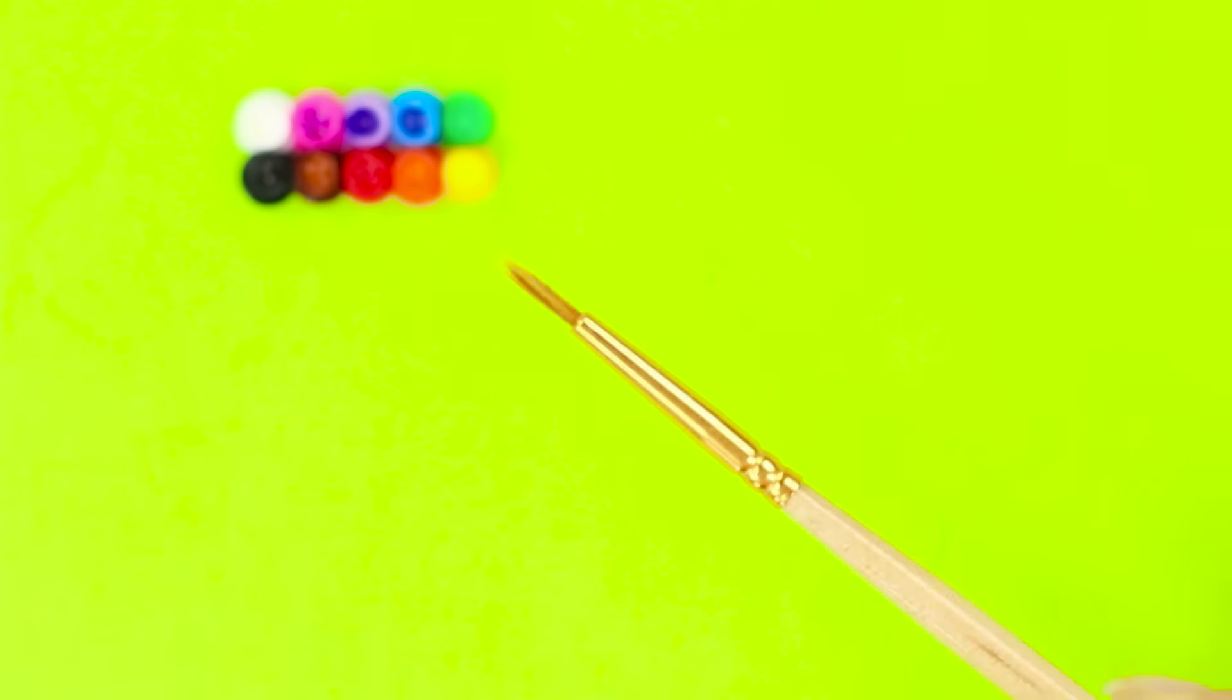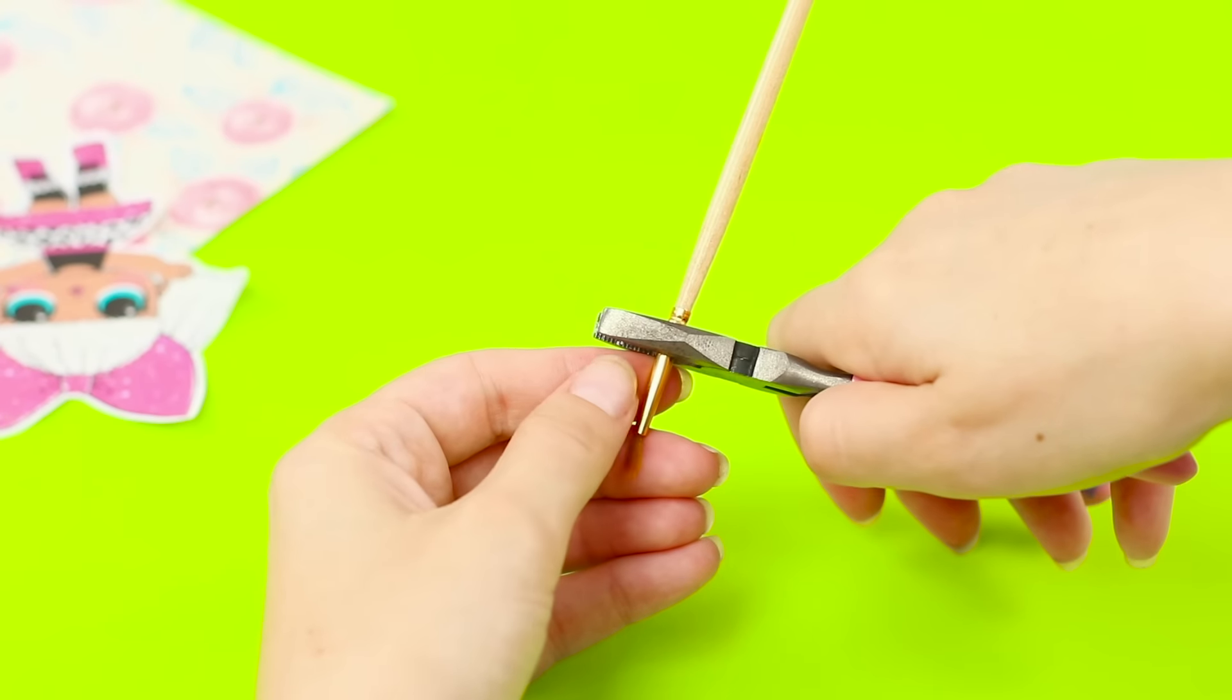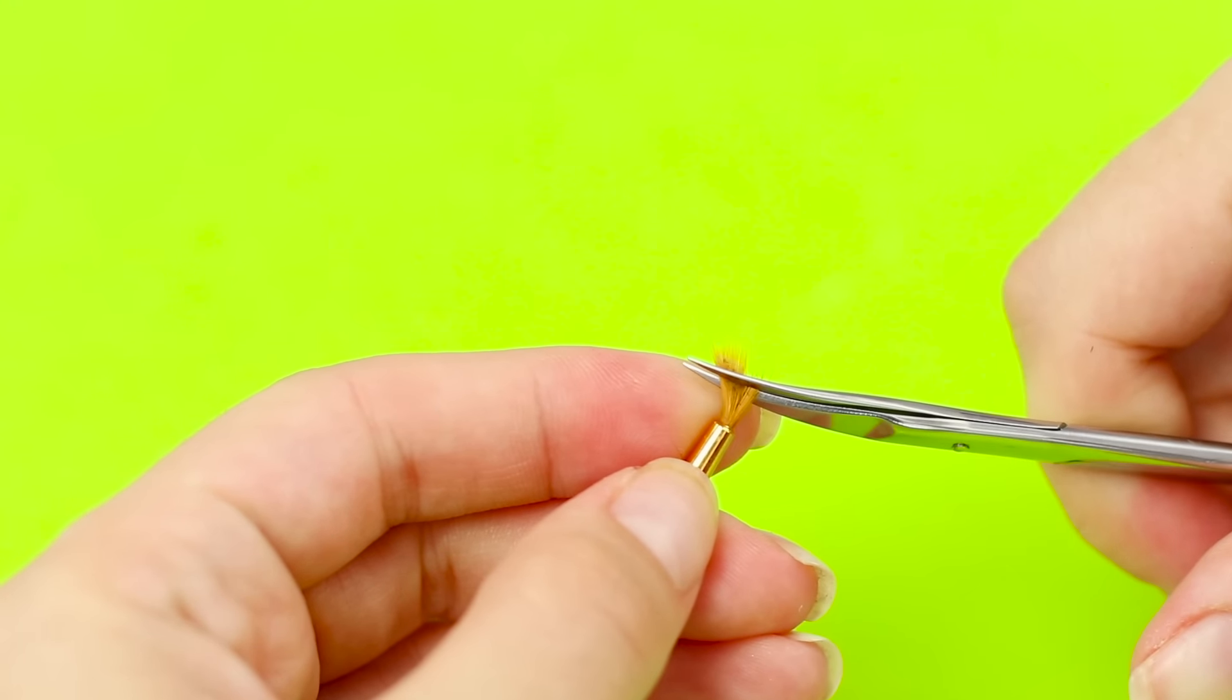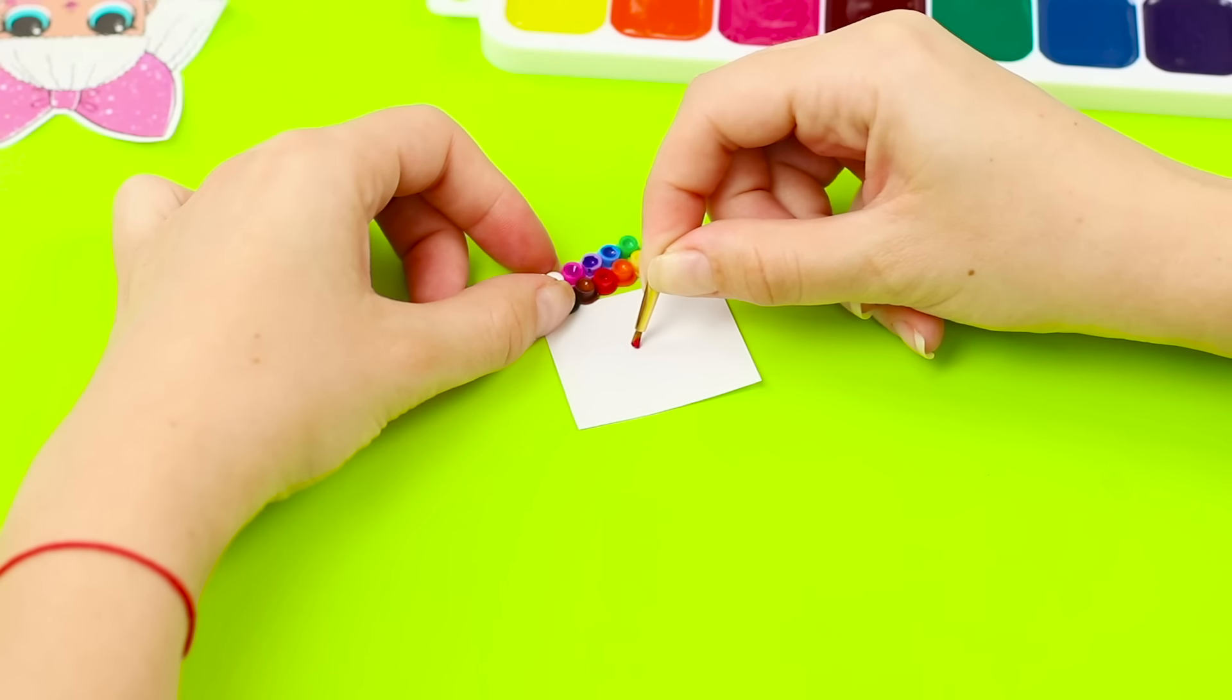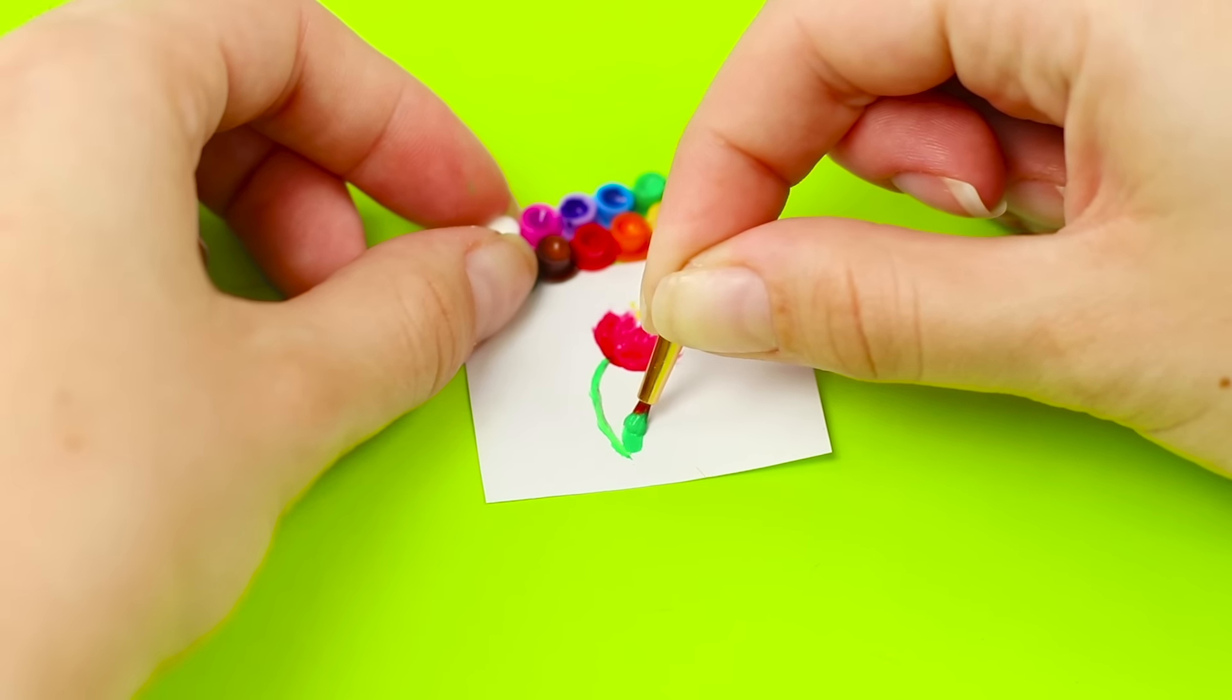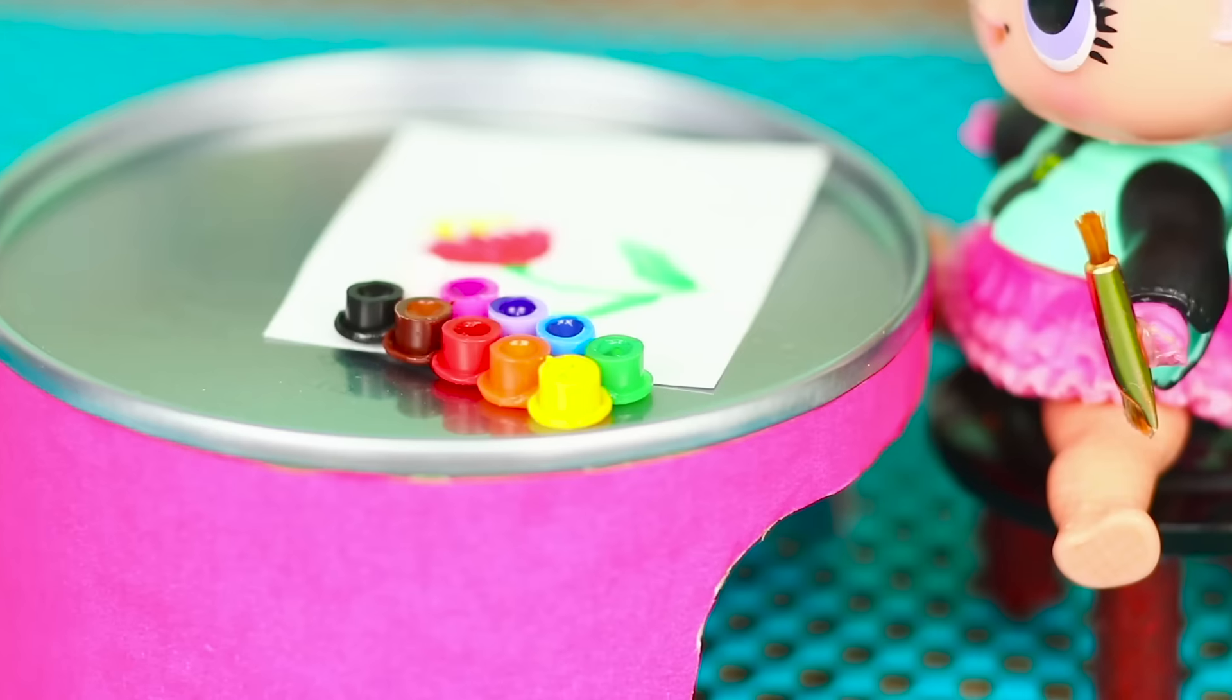Now, take the brush. Cut off part of it with pliers. Trim the bristles with nail scissors. So let's draw! You're so talented!